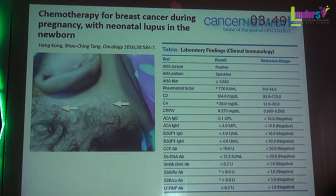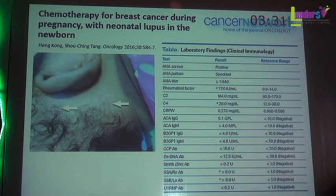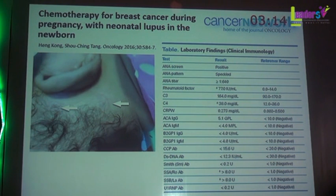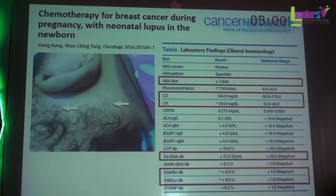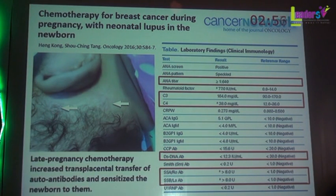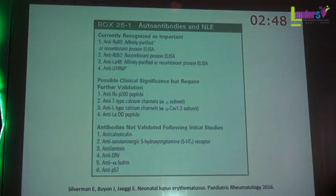An African-American infant born in the US had lesions initially mistaken for fungal infection. The mother had been diagnosed with breast carcinoma in the second trimester and received chemotherapy up to 35 weeks gestation. Punch biopsy confirmed neonatal lupus. The mother's ANA was positive, complement was normal (no hypocomplementemia), anti-DNA was negative, but anti-Ro and anti-La were positive. The authors concluded that late-pregnancy chemotherapy increased transplacental transfer of autoantibodies and sensitized the neonate.